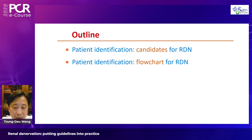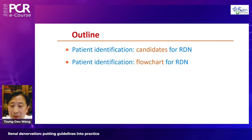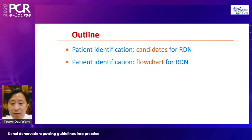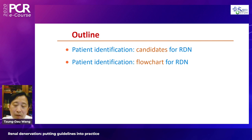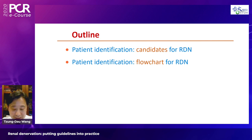The purpose of the patient identification tool is twofold: first, to identify the candidates for renal denervation, and second, to construct a reasonable pre-renal denervation flowchart for patient assessment.